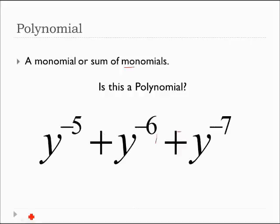How about this one? The answer's no, because remember, a monomial has to have whole number exponents. Whole number exponents are 0, 1, 2, 3, not the negatives. Negative numbers are not whole numbers, and therefore these are not monomials, and so this is not a sum of monomials. So no, this is not a polynomial.